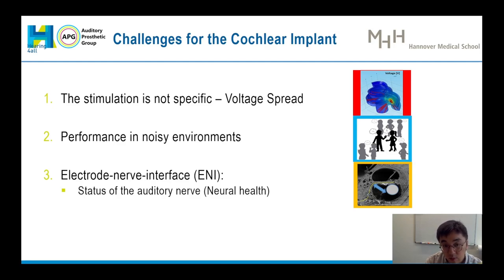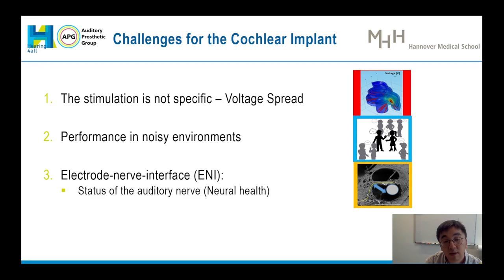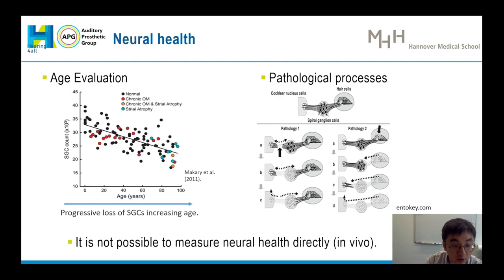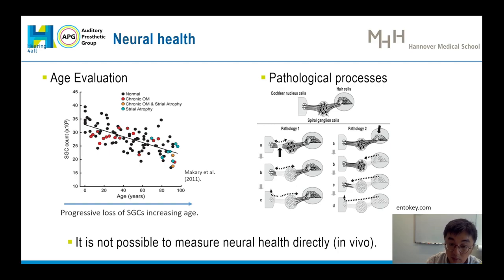As one of the most successful implants in the world, CI still faces some challenges. For instance, the stimulation of CI is not specific because of the large voltage spread inside the cochlea. Secondly, a lot of CI subjects have reported that CI performance in the noise environment is not that good, which is addressed as the cocktail party effect. The third challenge is called the electro-nerve interface. One of the most important parts for the ENI is the status of the auditory nerve fibers, which is named as the neural health. The success of CI highly depends on the health and function of the auditory nerve fibers. Many studies have reported a significant decrease in neural response for degenerated auditory nerve fibers, related to age or pathological processes such as exposure to loud noise or taking certain medicines.